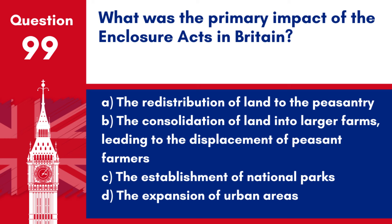Question 99. What was the primary impact of the Enclosure Acts in Britain? a. The redistribution of land to the peasantry. b. The consolidation of land into larger farms, leading to the displacement of peasant farmers. c. The establishment of national parks. d. The expansion of urban areas.